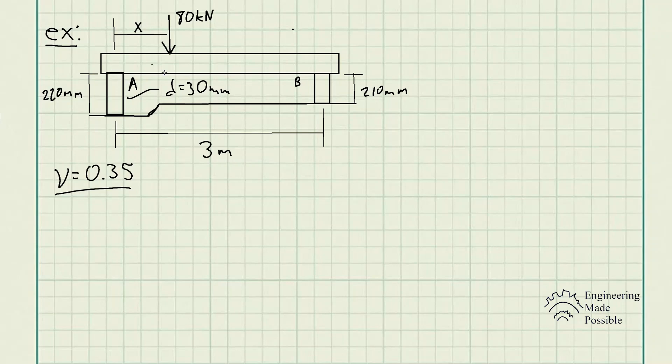Our intuition from statics: we want these two to deform the same way, so wouldn't X just be half of three meters? Well, in this case, since the lengths are different, going back to the deformation equation, which is PL over EA, the deformation is dependent on the length as well. If the length is not the same, that means the deformation won't be the same.